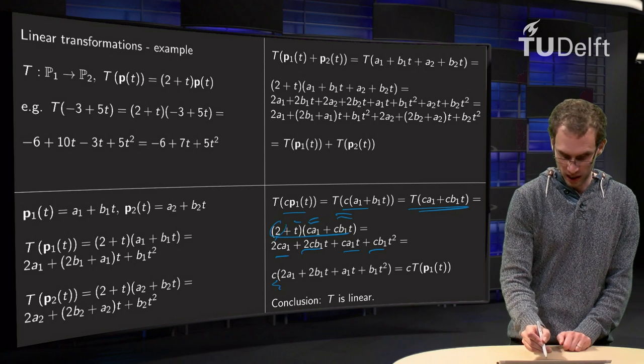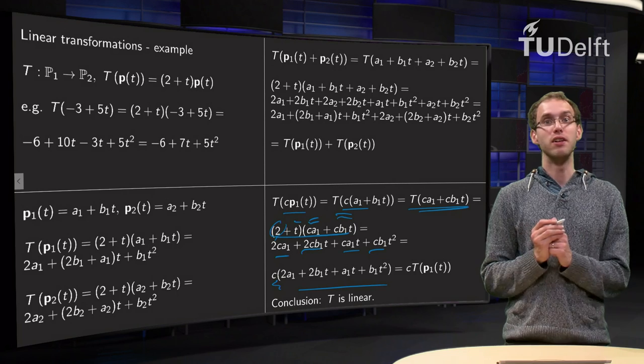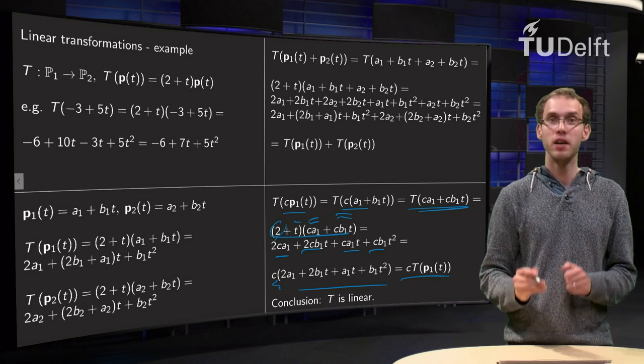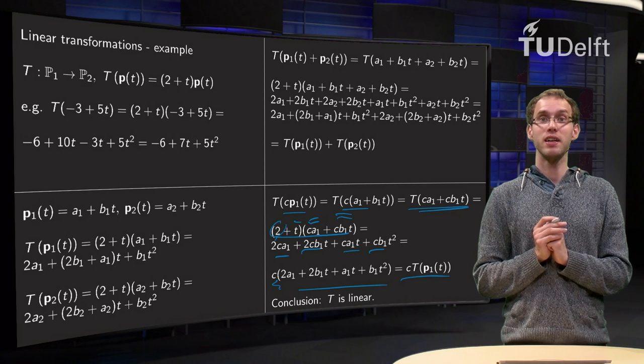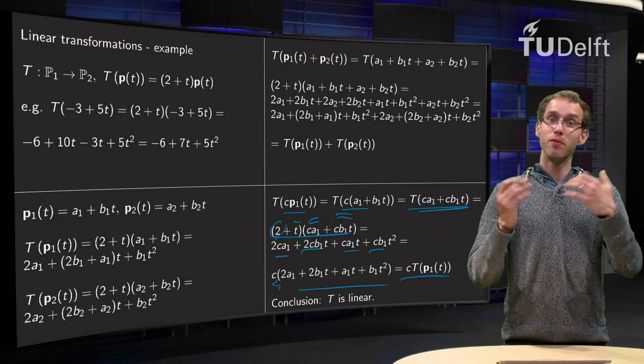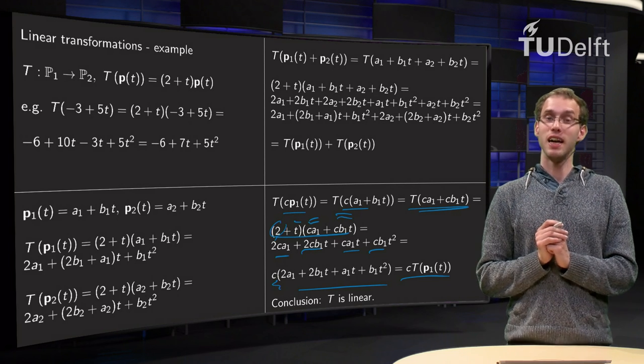And you see what's between the brackets is exactly again the T of P1, so we get C times the T of P1. So both properties of linearity are satisfied, which means that our transformation is linear.